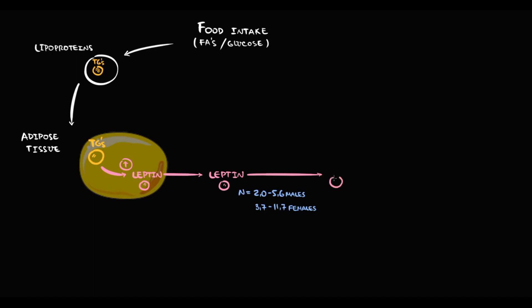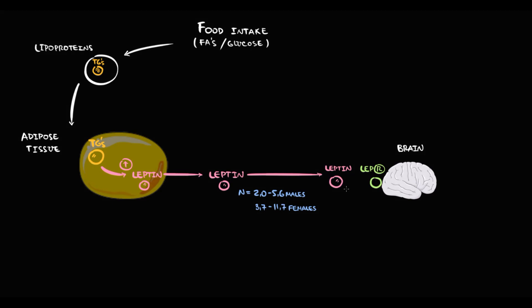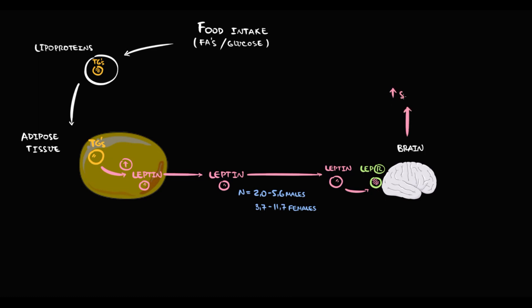In the blood, leptin is searching for the leptin receptors, which are located in the brain tissue. Because leptin is a peptide, and peptides are hydrophilic substances, leptin cannot cross through the blood-brain barrier. So, to act, leptin should bind to the leptin receptor. And once leptin binds to the leptin receptor, the receptor becomes activated.